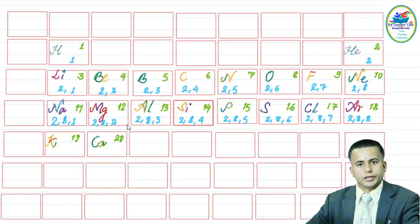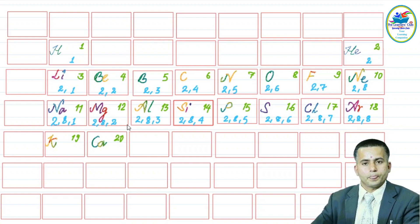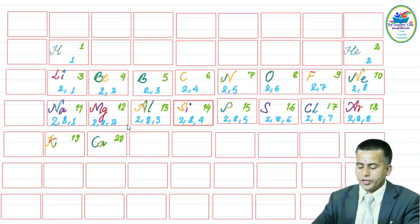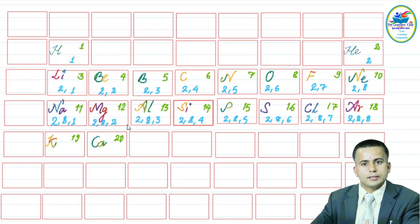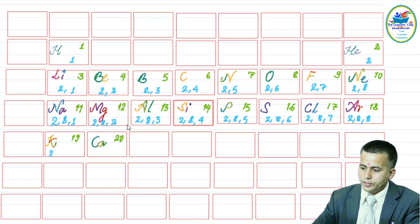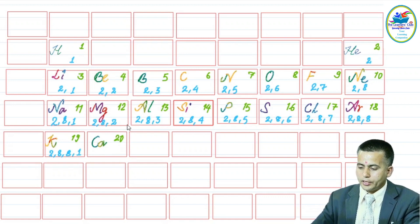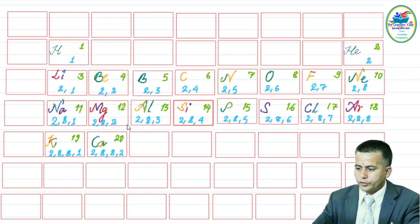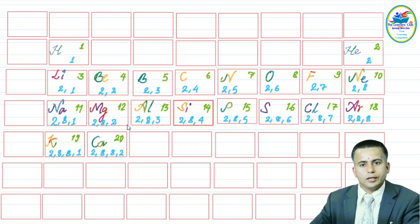Starting with potassium up to calcium — which is what your course covers — we can see K, L, M, and N shells. Potassium has two, eight, eight, and one electrons in the K, L, M, and N shells respectively. Calcium has two, eight, eight, and two electrons in those shells respectively.